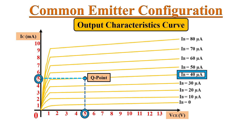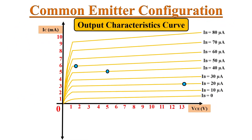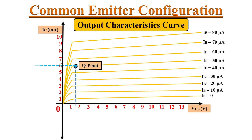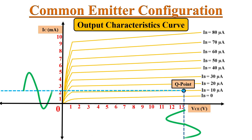The operating point can be set anywhere in the active region — at the center, or towards the top, or towards the bottom. Whenever the operating point is near the top and we apply an AC input signal, some portion of the amplified output signal will get clipped, because VCE cannot go below 0 volts. Similarly, whenever the operating point is near the bottom, some portion of the collector current will get clipped because IC cannot go below 0 amperes, and due to this, some portion of VCE voltage will also get clipped.